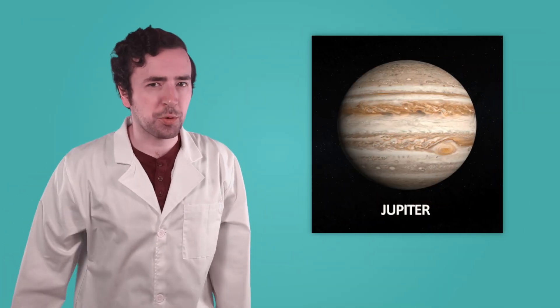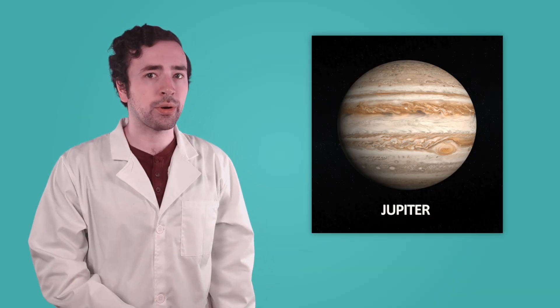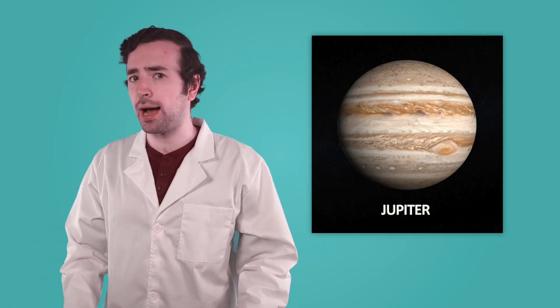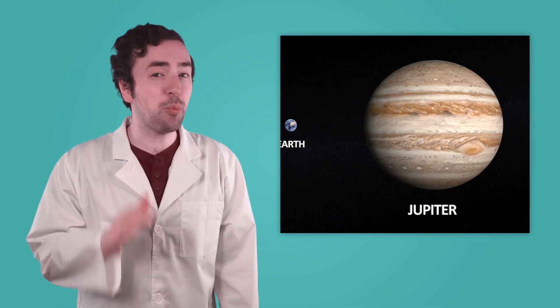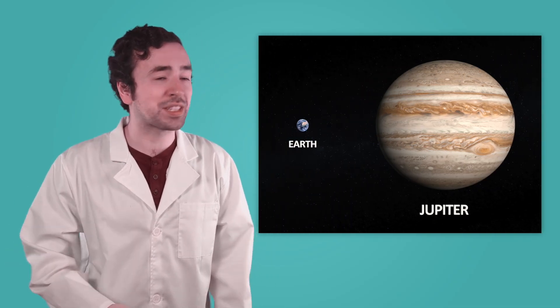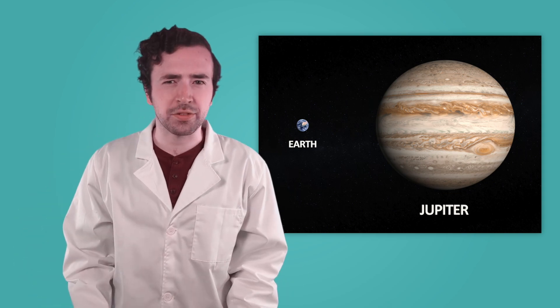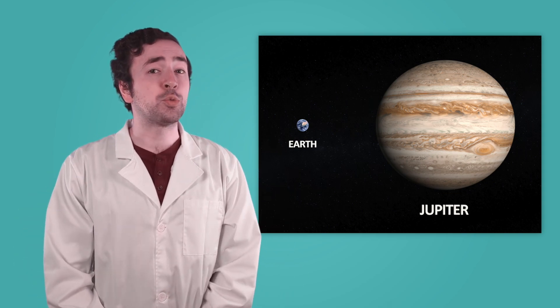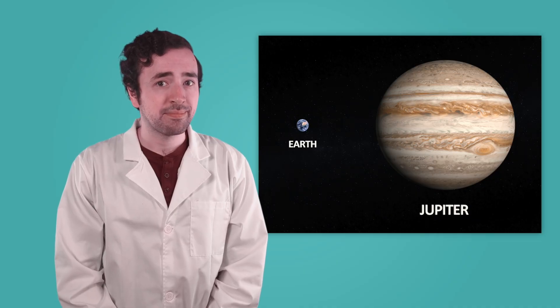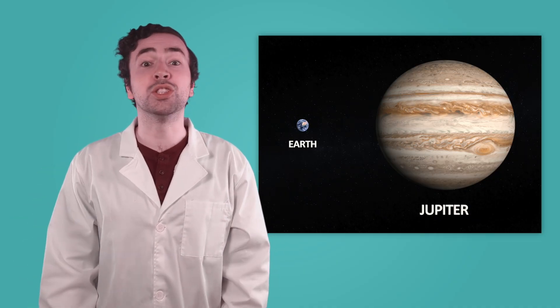The first outer planet and the fifth planet from the Sun is Jupiter. Jupiter is the biggest planet in our entire solar system. It's so big that you could fit more than a thousand Earths inside it. So, if Jupiter's so massive, what do you think that means for Jupiter's gravity? Because it's got so much mass, Jupiter's gravity is super strong.